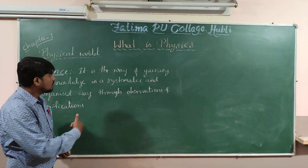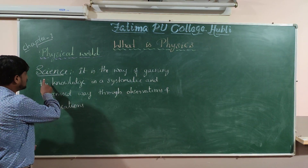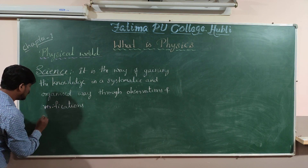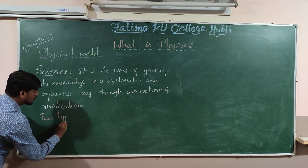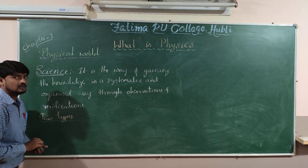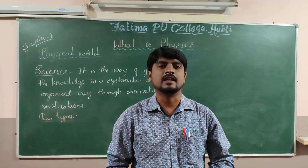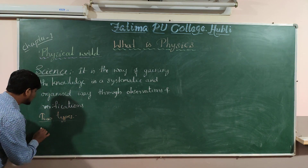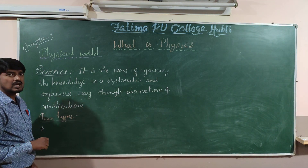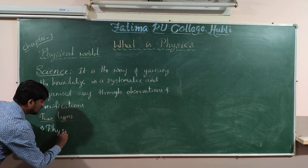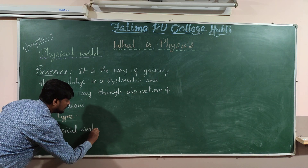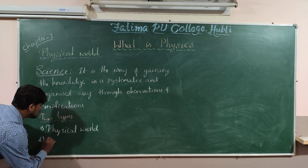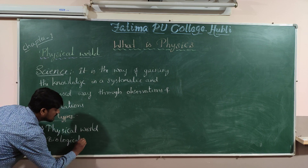Now, as you will have already studied at the school level, science is broadly classified into two types. One type of science deals with living things, and another type deals with non-living things. The science which deals with non-living things we call the Physical World, and the science which deals with living things we call the Biological World.